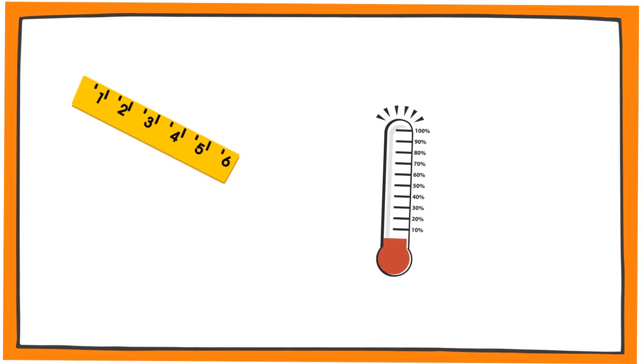Sometimes number lines are numbered by ones, like we see in the ruler: 1, 2, 3, 4, 5, 6.